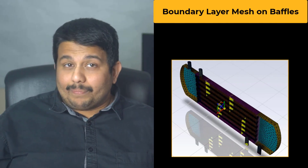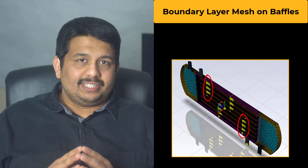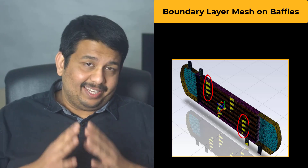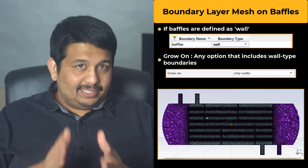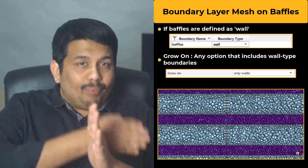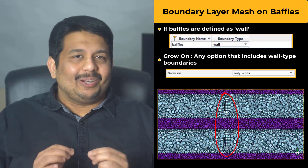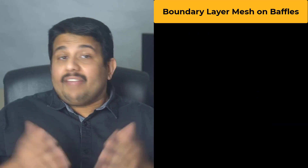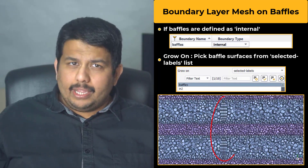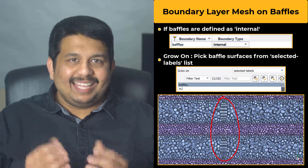It is also possible to create boundary layer mesh on baffles or zero-thickness surfaces, which are generally used to mimic two-sided walls or interiors. If the baffle is defined as a wall, the boundary layer mesh will be created on both sides of the baffle if Grow On is set to any option that includes wall surfaces. If the baffle is an internal region, boundary layer mesh can be created by setting the Grow On option to Selected Labels and picking the baffle surface.